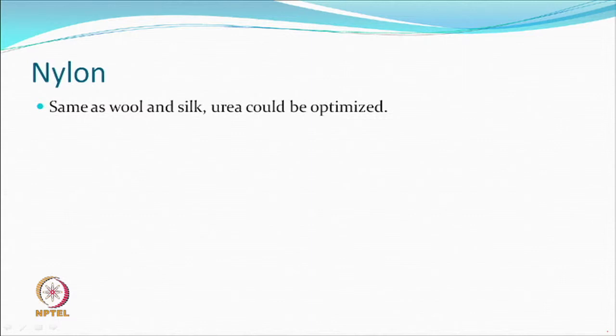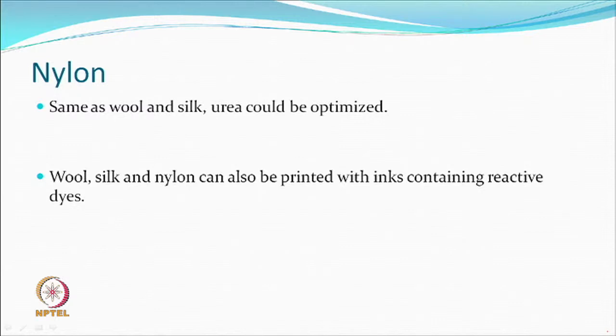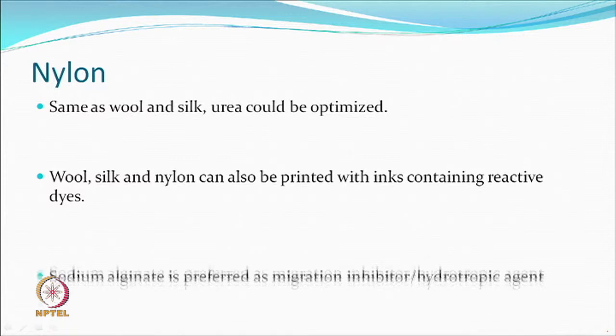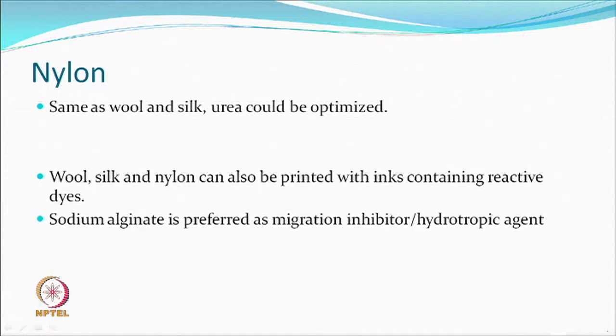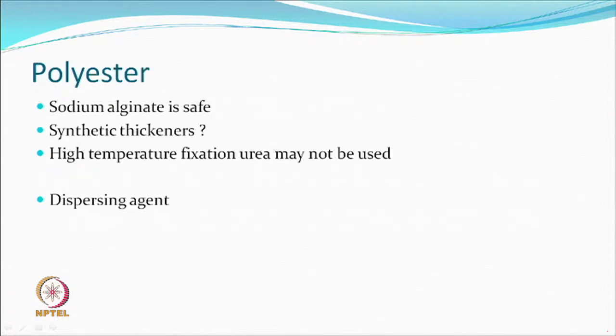Nylons can be printed in the same way as wool and silk — the same acid dyes can be used. Some optimization is needed due to differences in diffusion rate into nylon versus silk and wool, which are more hydrophilic. Wool, silk, and nylon can also be printed with inks containing reactive dyes, with a pre-treatment using alginate as a migration inhibitor so ink does not go beyond the print boundaries.